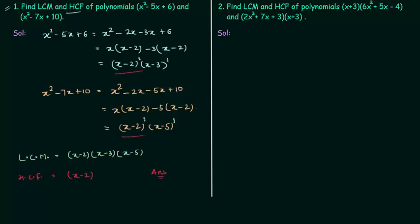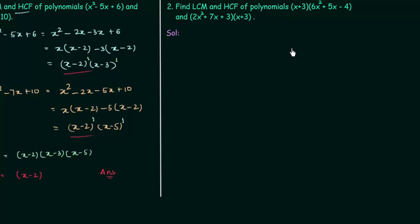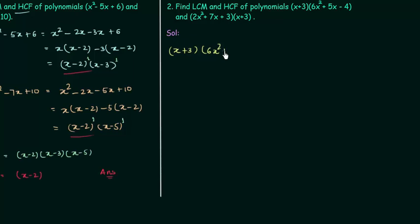Now we will move to problem number 2. We have two polynomials again and we have to find out LCM and HCF. The polynomials are (x + 3)(6x² + 5x - 4) and (2x² + 7x + 3)(x + 3). We have to factorize them, starting with the first polynomial.